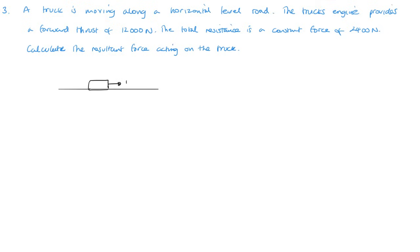So if we're moving in this direction then the resistance acts in the opposite direction and that's 2400 newtons. Calculate the resulting force acting on the truck. So it's just simply 12,000 minus 2400, and that's going to give me 9600 newtons force in the forward direction. So just using the words in the question direction, and it's that simple.